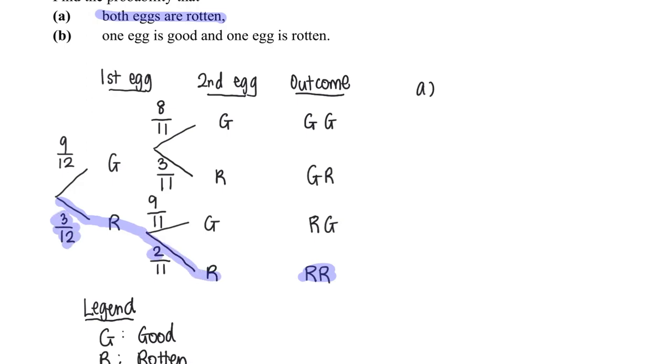That means these two probabilities I will need to multiply them. So probability that both eggs are rotten is simply 3 over 12 multiply by 2 over 11 to give me 1 over 22.